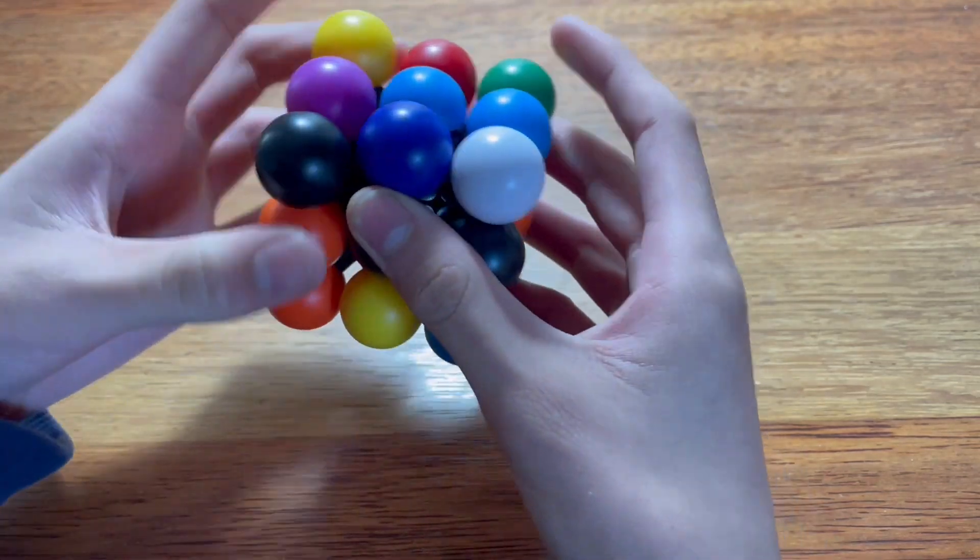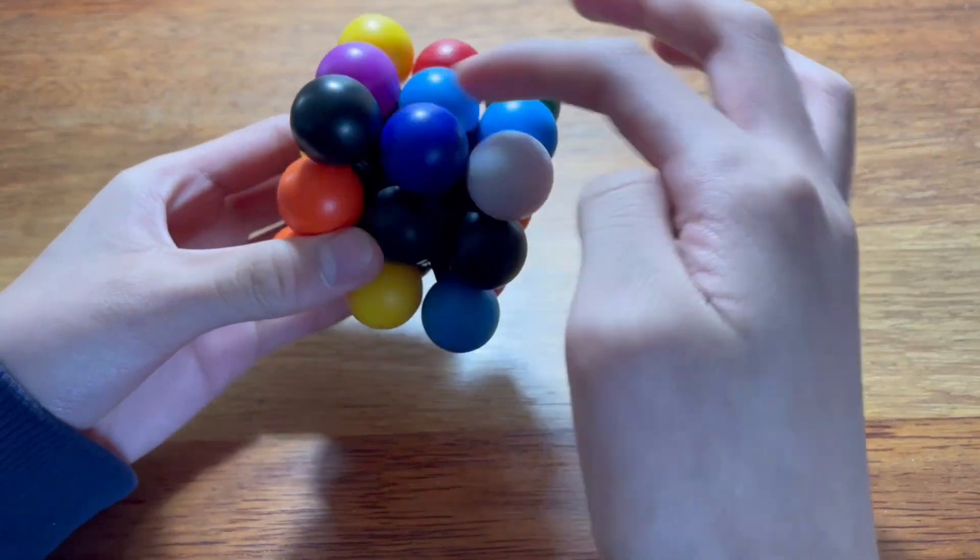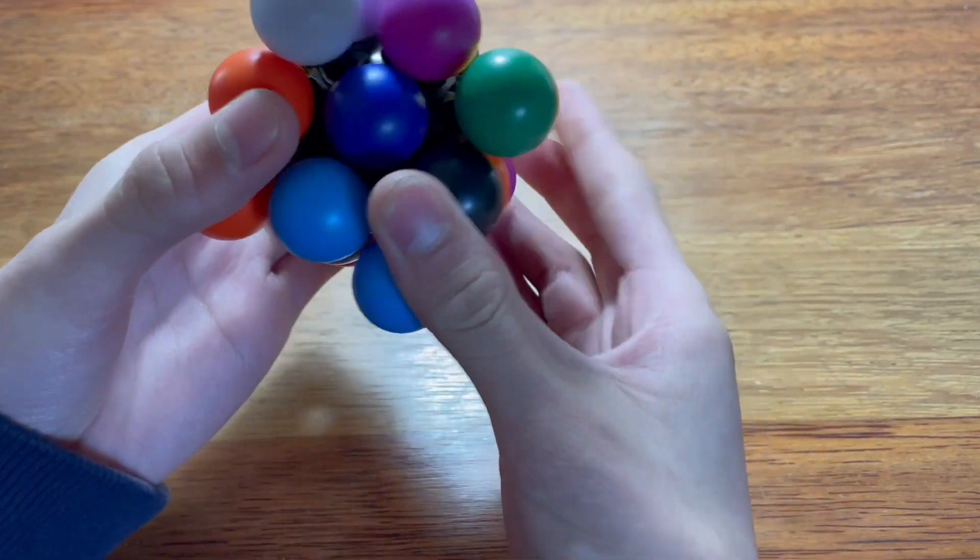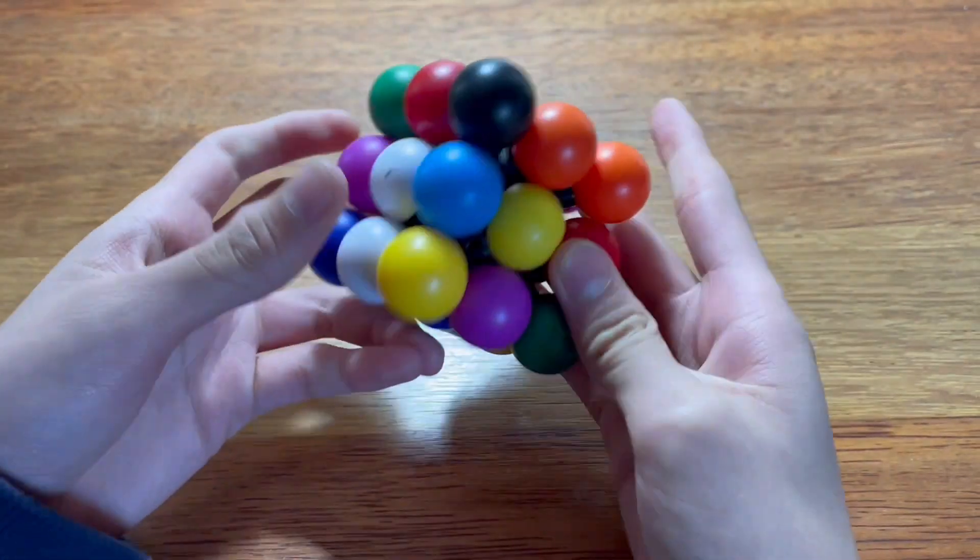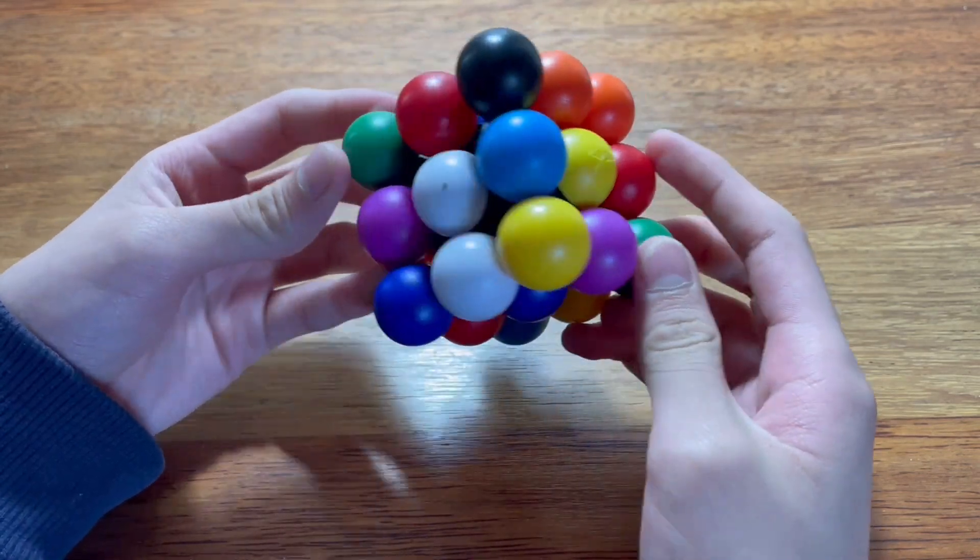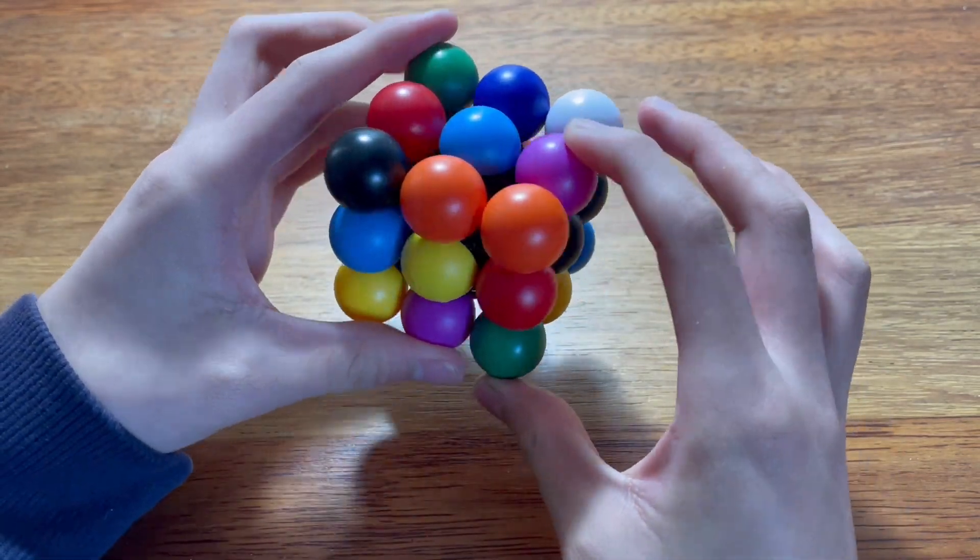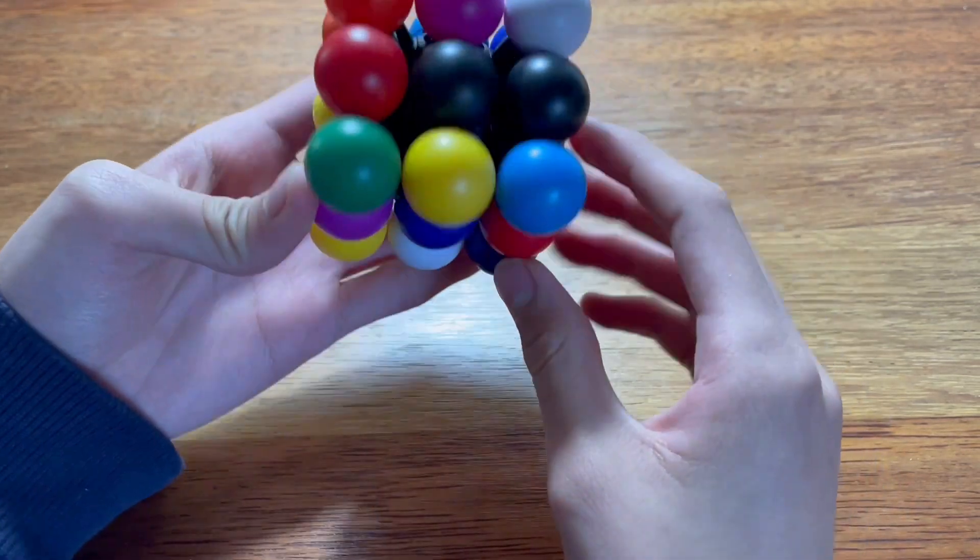All right. Because this is basically just a three by three. So I can use three by three algorithms on this thing. So I've got the green, I've got the purple, the red also is three edges.